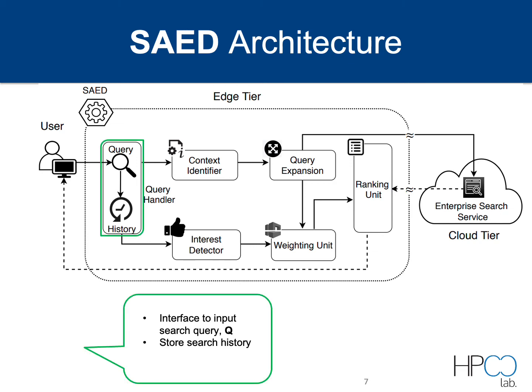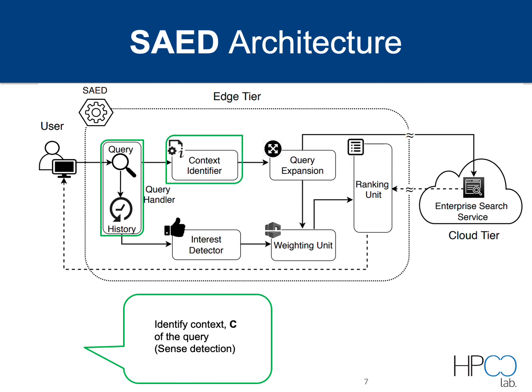The query handler is an interface to input the search query, and it also stores search history. Then the query is passed to the context identifier for context identification, which is also called sense detection. For example, if the query is 'cloud computing,' the word 'cloud' is ambiguous. We have to understand whether it refers to a sky-related thing like overcast, or to high-performance computing. Such things are processed in the context identifier unit.